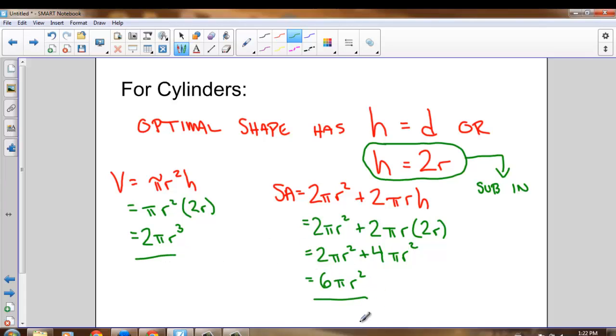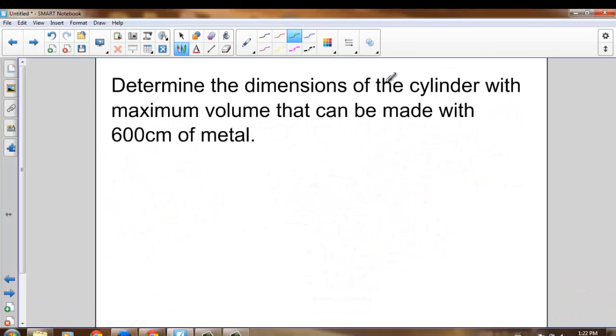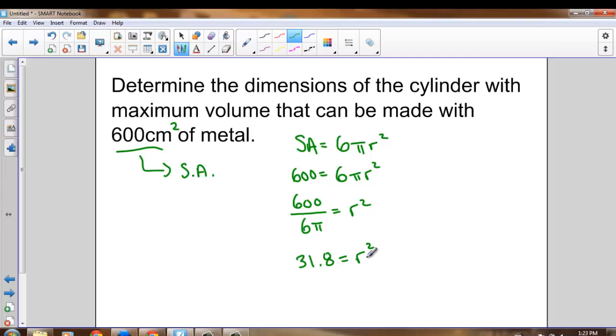And these are the two formulas that we can use to solve problems, such as determine the dimensions of the cylinder with a maximum volume that can be made with 600 centimeters squared of material. This is a surface area. And we just saw that surface area of an optimal cylinder is equal to six pi r squared. We can use this number, 600, to solve for r. So I can take 600 and I can divide it by 6 pi and that equals r squared. So 600 divided by 6 pi is about 31.8. And then if I take the square root of that, I get a radius of about 5.64.